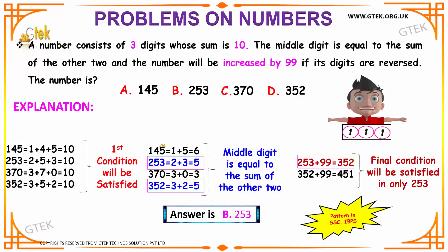Next, we check the second condition: the middle digit should equal the sum of the other two. For 145, the middle digit is 4, but 1+5 = 6, which is not equal — condition not satisfied. For 253, the middle digit is 5 and 2+3 = 5 — condition satisfied. For 370, 7 ≠ 3+0 = 3 — not satisfied. For 352, the middle digit is 5 and 3+2 = 5 — condition satisfied.